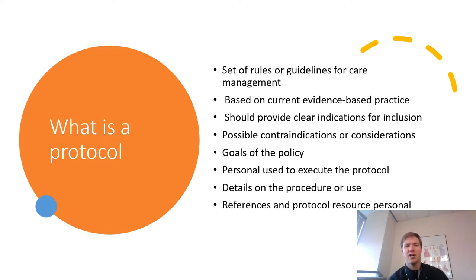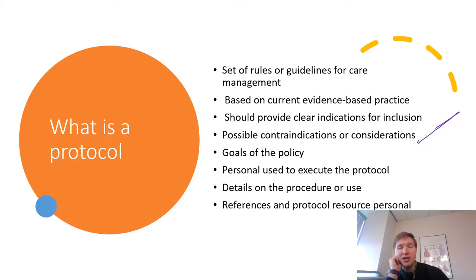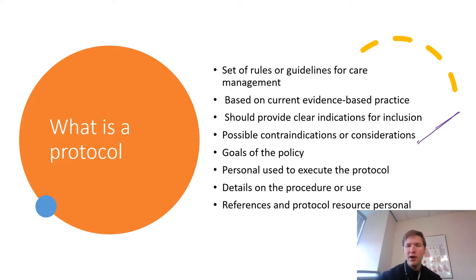The next component is possible contraindications or considerations. For example, when looking at permissive hypercarbia, patients with intracranial pressure issues may not be appropriate candidates. If a patient has really poor hemodynamics, should we do a lung recruitment maneuver protocol on them? These contraindications or considerations tell us not only if it's the right patient population, but within that population, what are some reasons we shouldn't do this, or what we need to be considerate of before executing it.